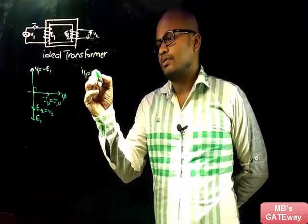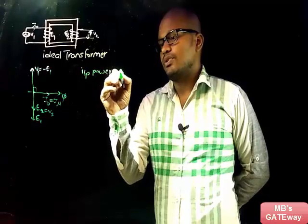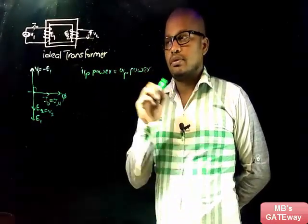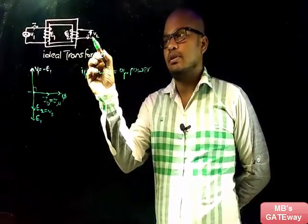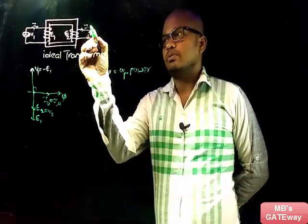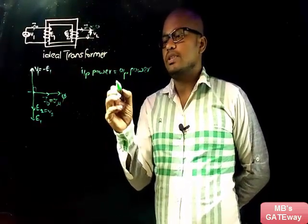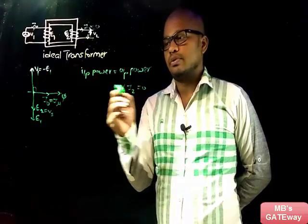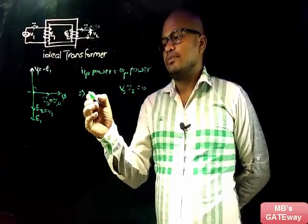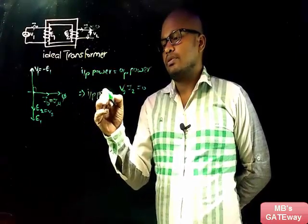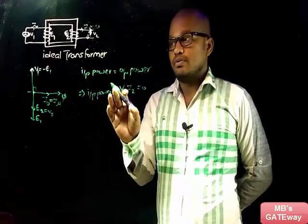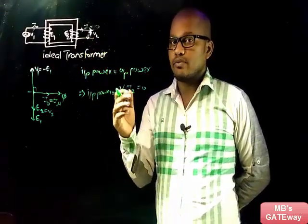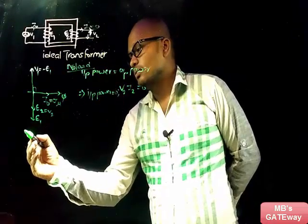Input power is equal to output power. In the no-load case, I2 is zero, which means output power V2·I2 is zero. This implies input power is also equal to zero, meaning the power intake of a no-load ideal transformer is zero, and therefore the losses in the ideal transformer are also zero.